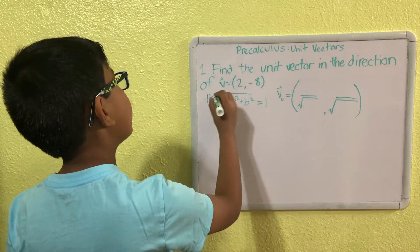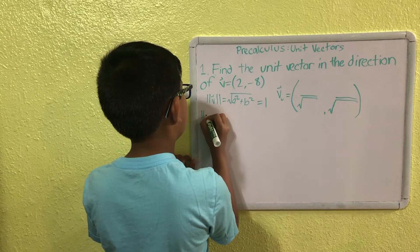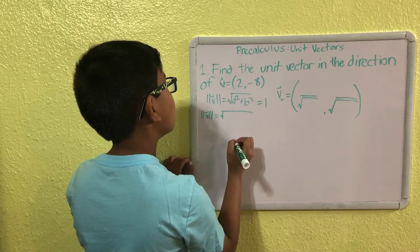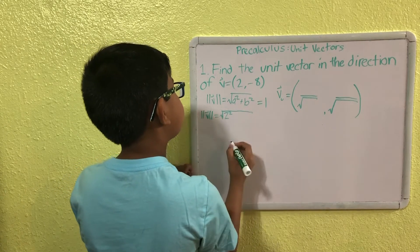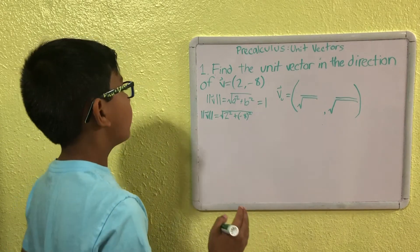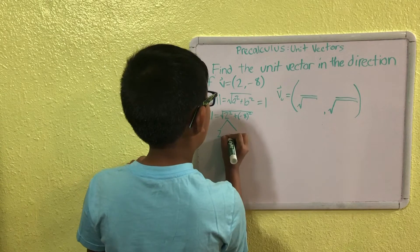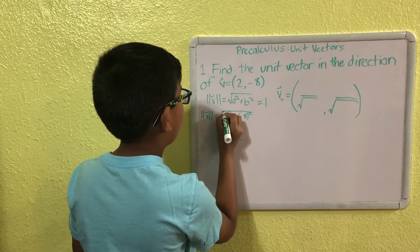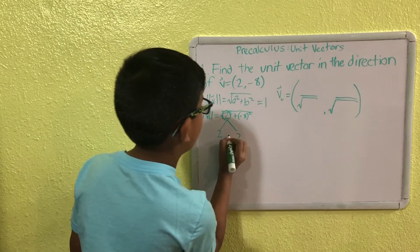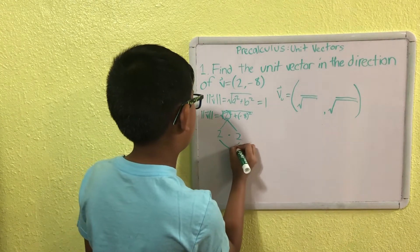First we find the magnitude. The magnitude of vector V equals the square root of 2² plus (−8)². In case you're not familiar, squaring a number means multiplying it by itself — for example, 2 squared is 2 times 2. In this case, 2 times 2 is 4.